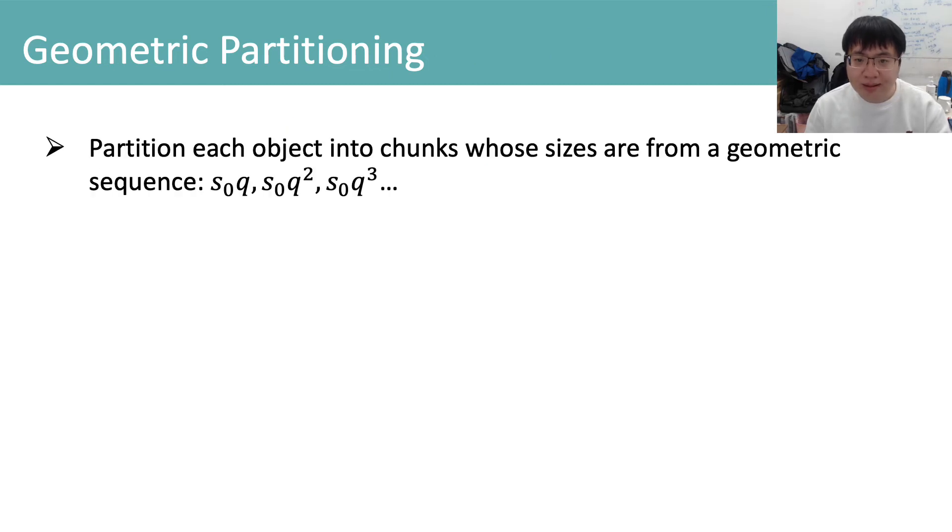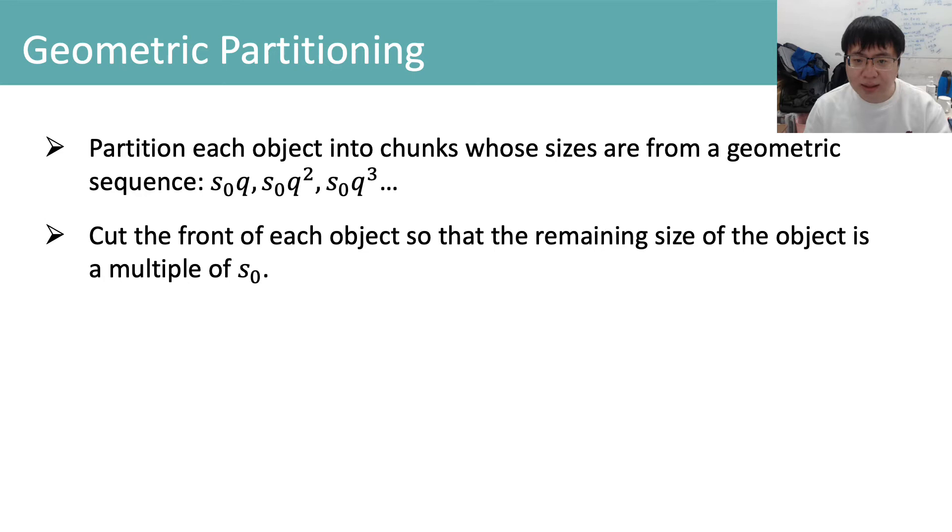Geometric partitioning partitions each object into chunks whose sizes are from a geometric sequence s0 times q, s0 times q squared, and s0 times q cubed. The front of each object is cut so that the remaining size of the object is a multiple of s0.